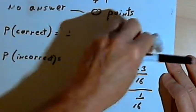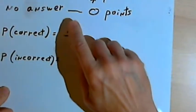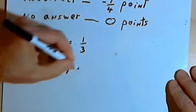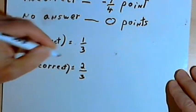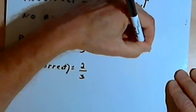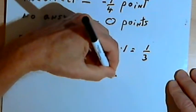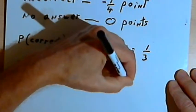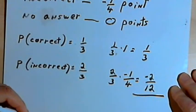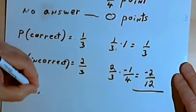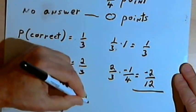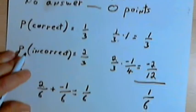Let's see what happens if you can rule out two of the answers. Now there are only three choices remaining. Your probability of a correct answer is one-third, and of an incorrect answer is two-thirds. So one-third times one equals one-third. Two-thirds times negative one-quarter equals negative two-twelfths. Converting to a common denominator of six: one-third equals two-sixths, and negative two-twelfths equals negative one-sixth. Your expected value is one-sixth.